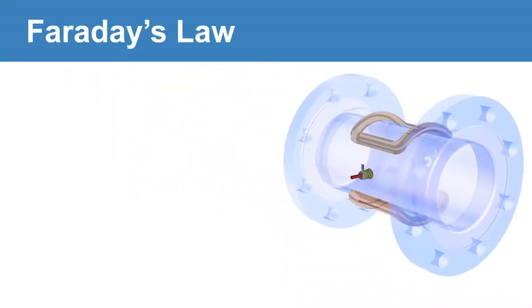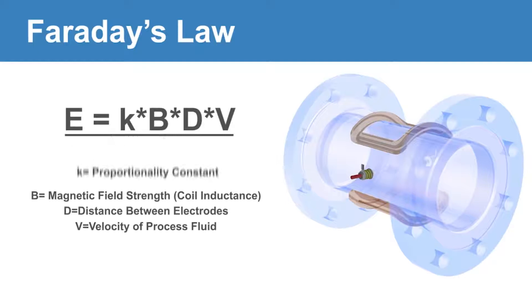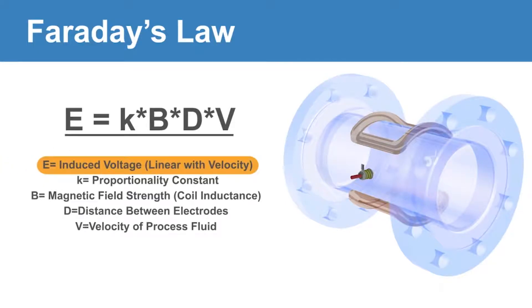This flow principle is known as Faraday's law, mathematically defined by the equation E equals K B D V, where the induced voltage, E, is directly proportional to the velocity, V, of the fluid moving through the magnetic field, B.